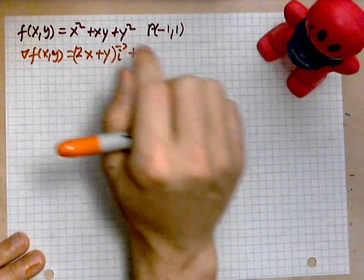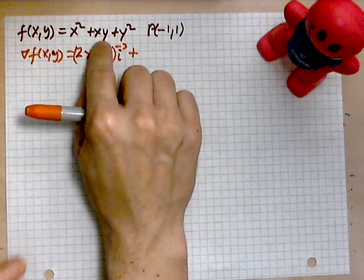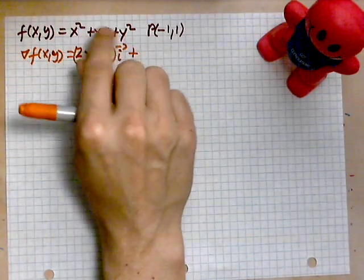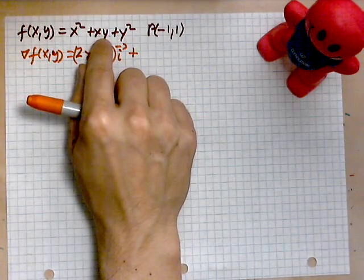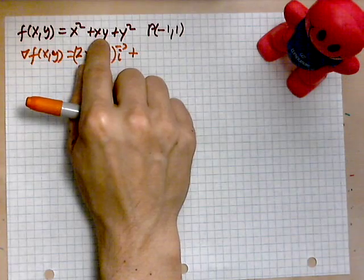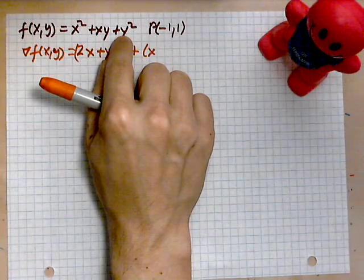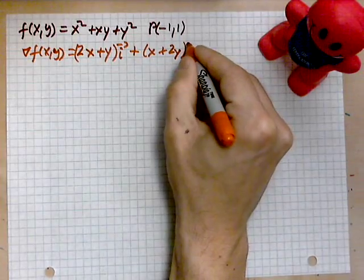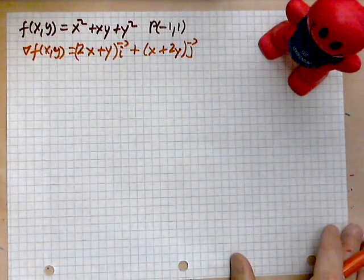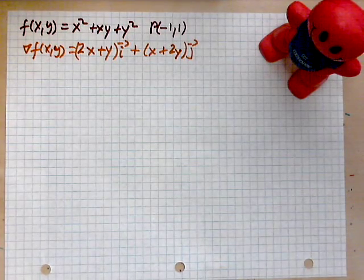Then we add the j-component of the gradient. The derivative of x² with respect to y is 0, the derivative of xy with respect to y is just x, and the derivative of y² with respect to y is 2y. So the j-component is x + 2y.